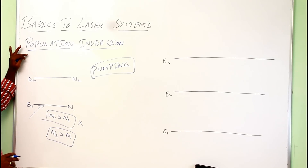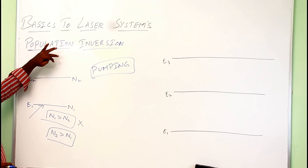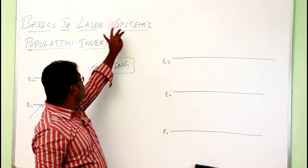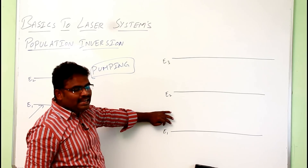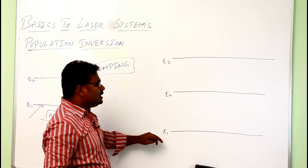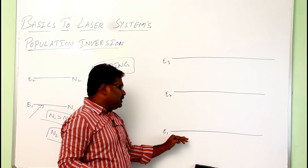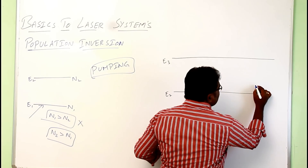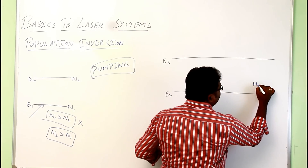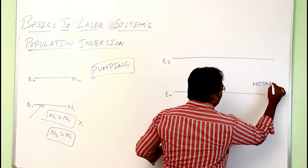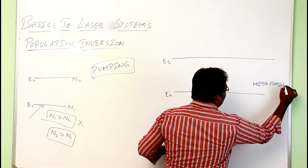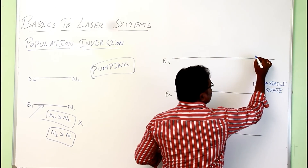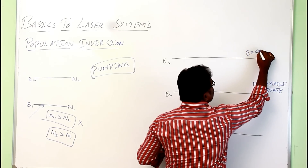To understand population inversion, I am going to explain it with the help of an energy level diagram (ELD). Let us take three energy levels: E1 is the ground state, E2 is the metastable state, and E3 is the excited state.